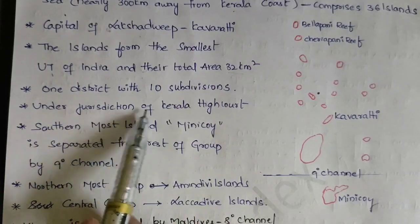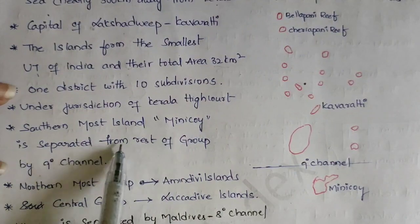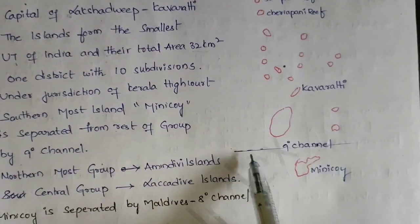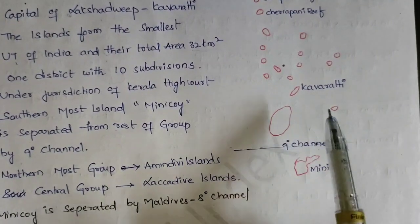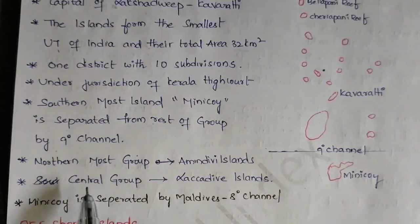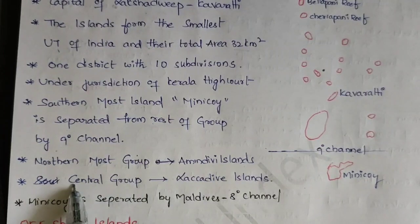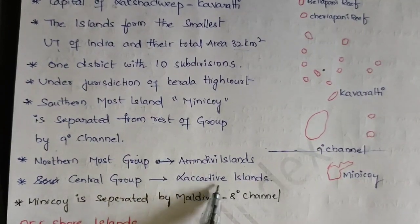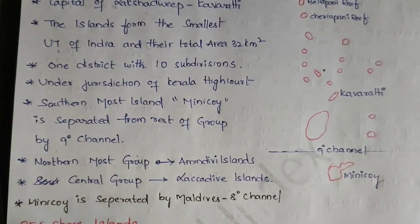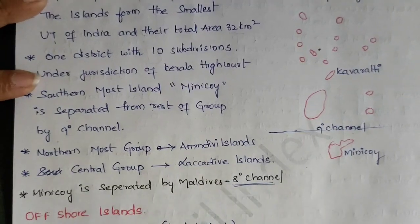The southernmost island, Minikoy, is separated from the rest of the group by the Nine-degree Channel. The northernmost group of islands are collectively called the Amindivi Islands, and the central group is the Lakshadweep islands. Minikoy is also separated from the Maldives by the Eight-degree Channel.